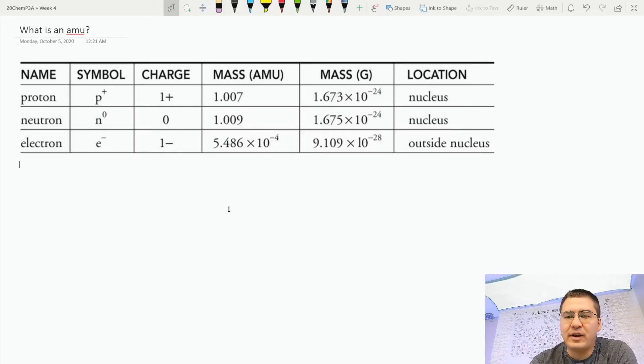Okay, let's talk about what an AMU is, or an atomic mass unit. Typically in chemistry, when we're dealing with things in the lab, we're going to work with quantities of chemicals using the unit mole, and we'll be able to measure things out in grams, and that's fairly practical.